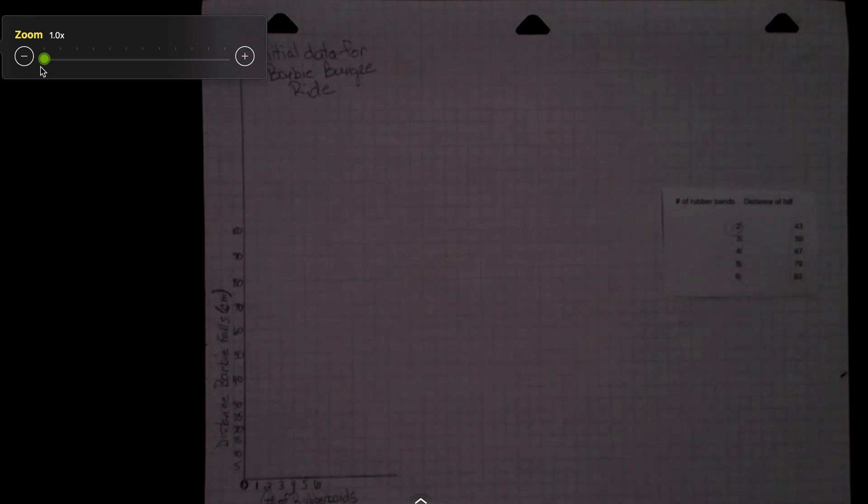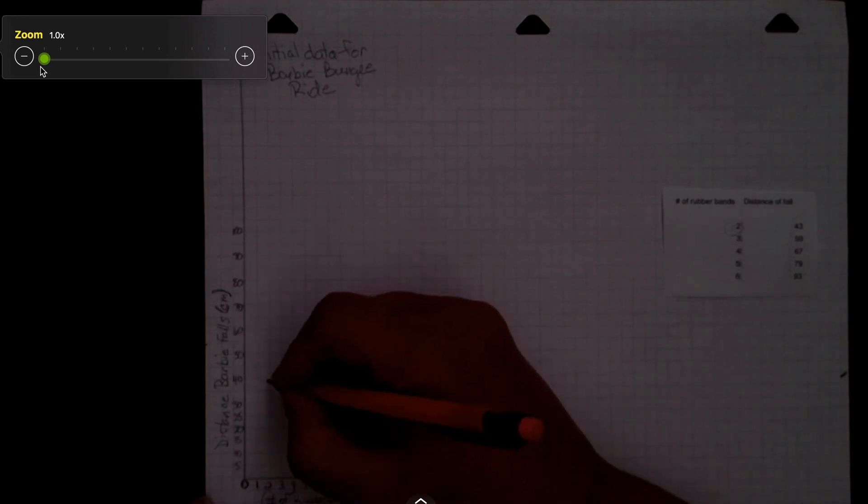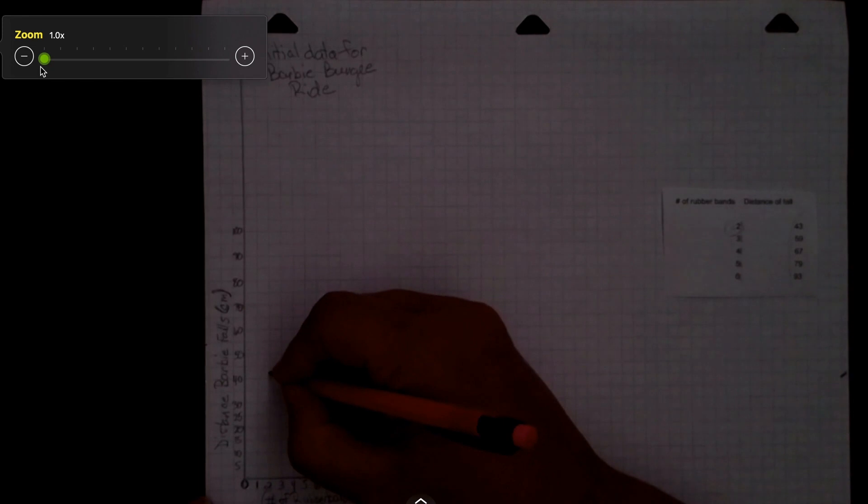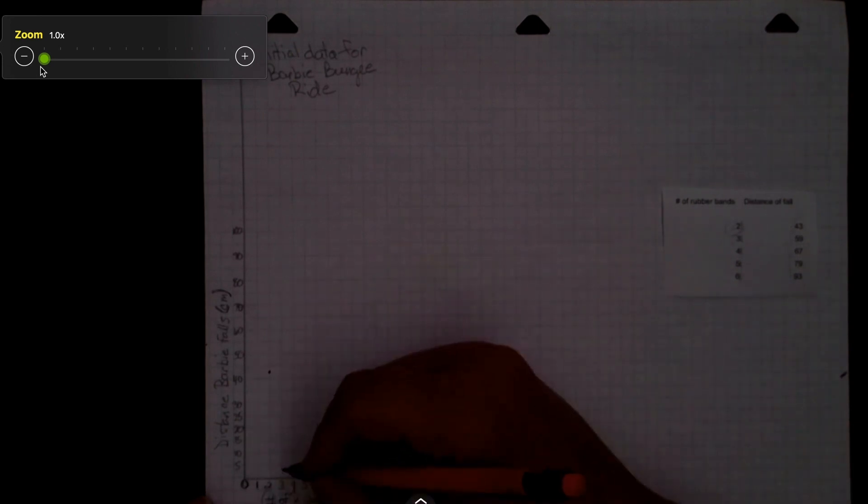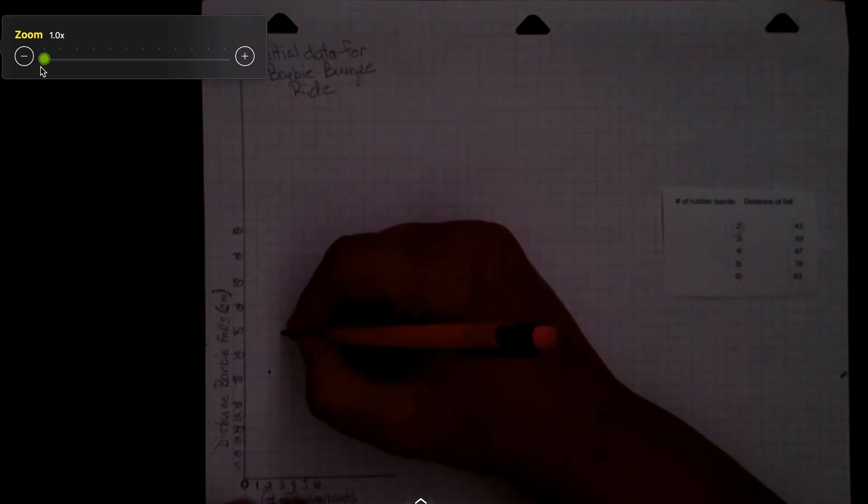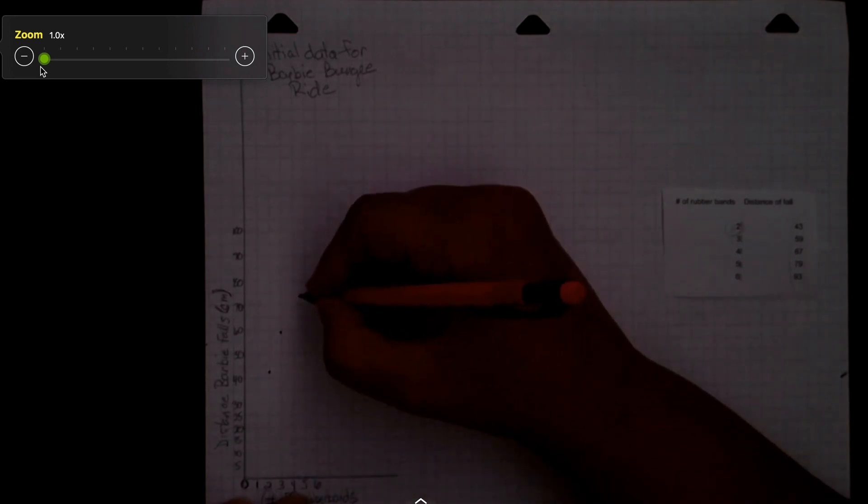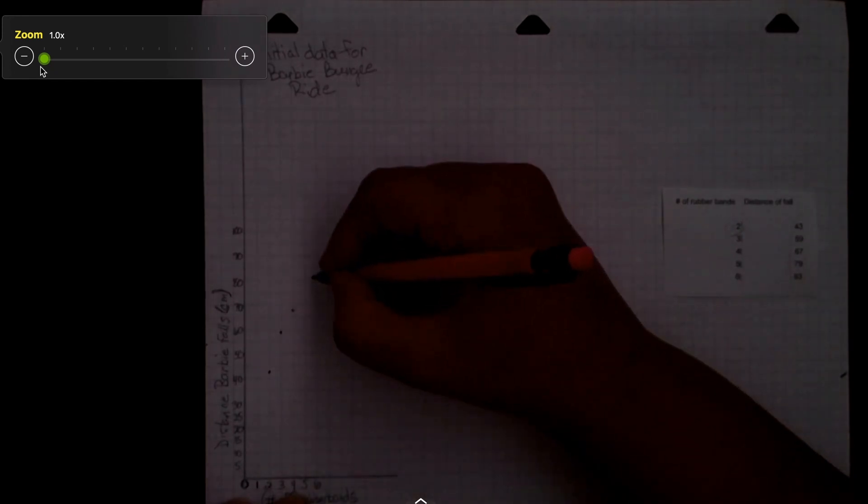We're going to graph our data here for two rubber bands. We have 43 centimeters. Sometimes, the students freak out because there is not a 43 on the paper. That is where those problem-solving skills come in. I tell them, where do you think 43 is on this graph? And they can easily figure that out. Four rubber bands is at 67. Five rubber bands is at 79. And six rubber bands at 93.